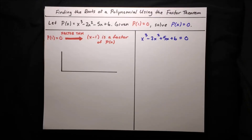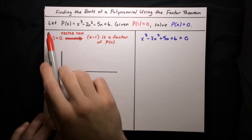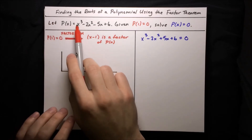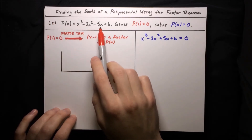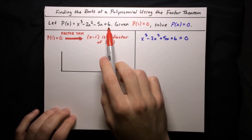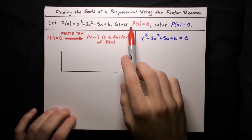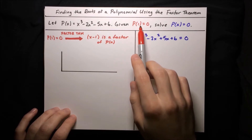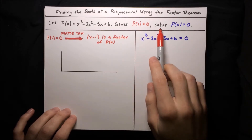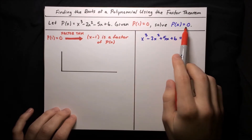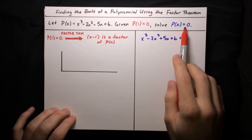In this video, I'm going to show you how to find the roots of a polynomial using the factor theorem. We've got a polynomial, x cubed minus 2x squared minus 5x plus 6, and we're given that p of 1 equals 0, and we want to solve the equation p of x equals 0.